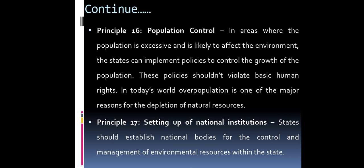Principle 16 — Population control. In areas where the population is excessive and likely to affect the environment, states can implement policies to control population growth. These policies should not violate basic human rights. In today's world, population is one of the major reasons for the depletion of natural resources. Principle 17 — Setting up of national institutions. States should establish national bodies for the control and management of environmental resources within the state.